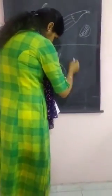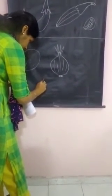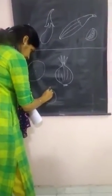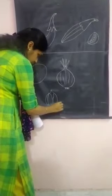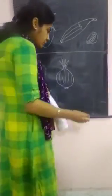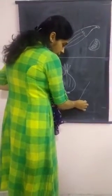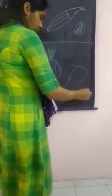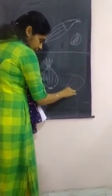Now we will make garlic — same like this. Draw a line, then circles like this. This is garlic — matlab lasun. Now last one is carrot. Draw a slanting line, go up from this point, draw another slanting line, take a curve. Then draw small slanting lines like roots.